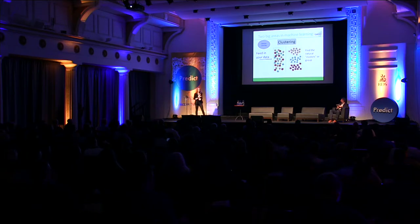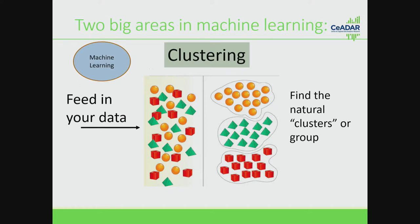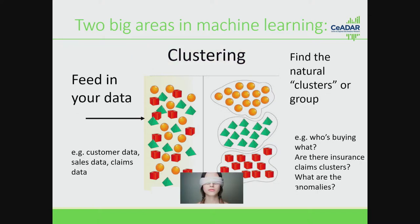The two big areas in machine learning — the first one is clustering. Clustering is about finding natural groupings in your data. If you feed in information such as your set of all your customers, your clustering algorithm will be able to spot patterns that naturally group them. So you might have customers purchasing certain types of products at certain times of day. It does that in an unsupervised way — hence the blindfold. You're not labeling data, you're simply feeding in information. Good examples are customer data, sales data, and insurance claims data — for example, who's claiming, and are there groups that stick out relating to fraud?